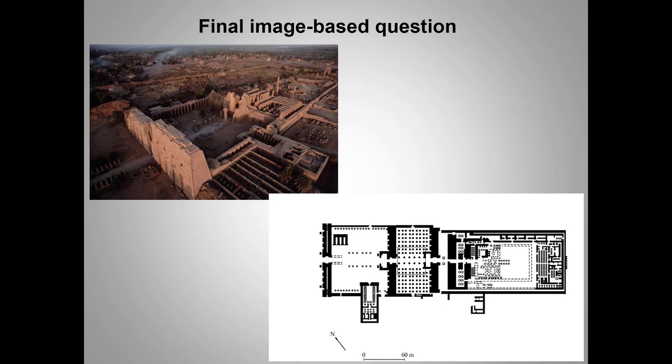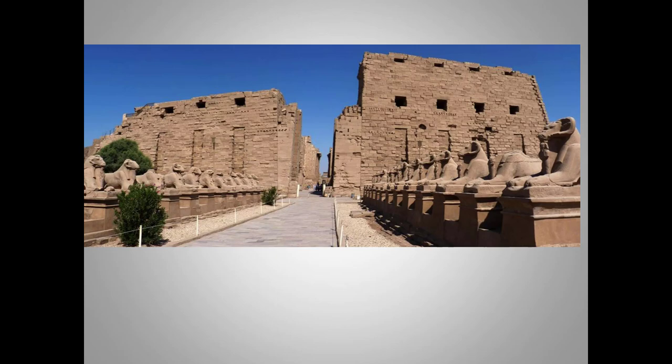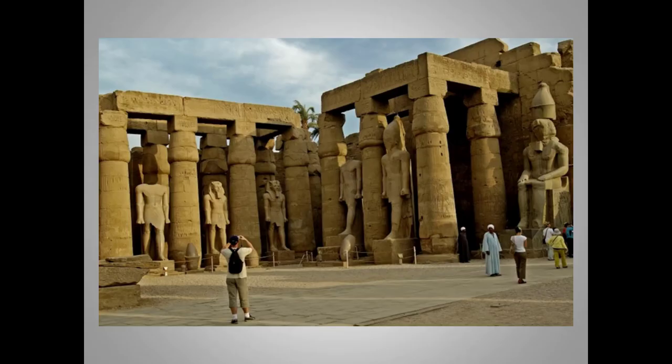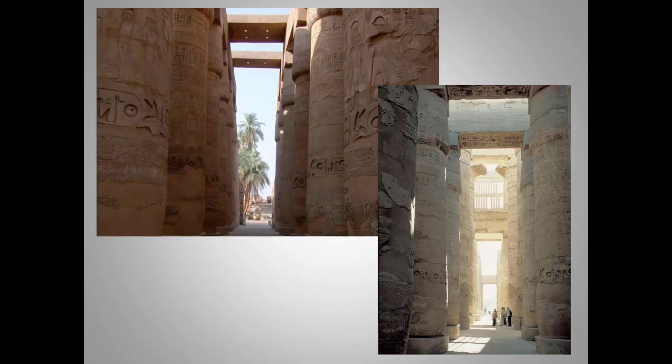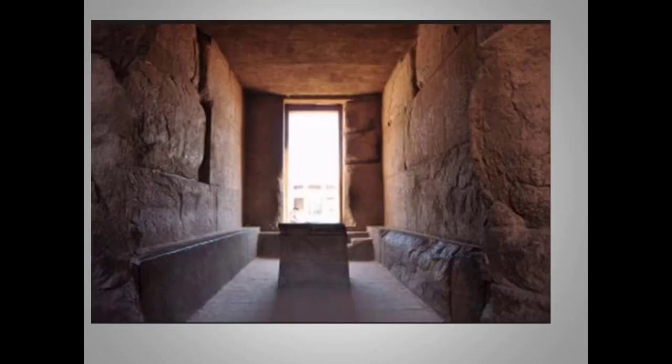What are the columns in the hypostyle hall imitating? As a pharaoh walked through the temple complex — starting at the pylon gates, moving through the hypostyle hall, and finally standing at the sanctuary — what was his experience? What changed in terms of the physical appearance of the rooms as he moved further in? The plan comes without labels. He begins at the pylon gates, enters an open courtyard, then this section of the temple — note the light source — and finally reaches the inner sanctuary. Do you remember what would have resided there?